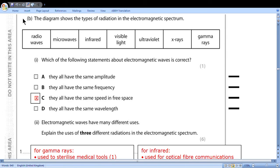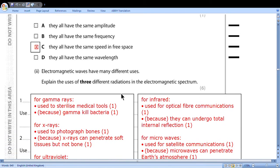The diagram shows the types of radiation in the electromagnetic spectrum. Which of the following statement about electromagnetic waves is correct? They have the same amplitude - that can be different. They have the same frequency - for sure they have different frequency. They have the same speed in free space - yes, it is 3.00 times 10 to the 8 meters per second. They have the same wavelength - that is wrong. They are different wavelengths.